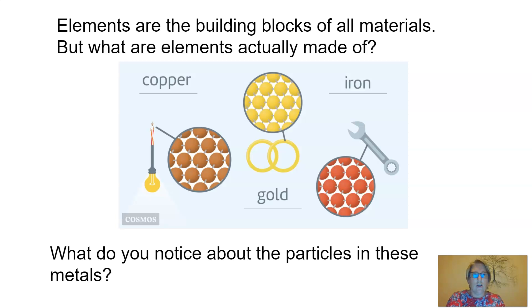Elements are the building blocks of all materials. But what are elements actually made of? If we look at the diagram here, here we have copper wires, here we have iron, and here we have gold rings. If we take a look at a microscopic level, what do you notice about the particles in these metals? I want you to think about your answer for a little bit, because we're going to look a little bit more about metals and the periodic table, and we're going to come to answering this question later on.